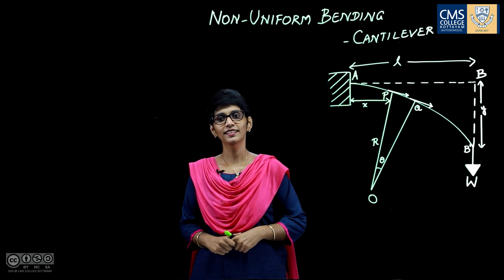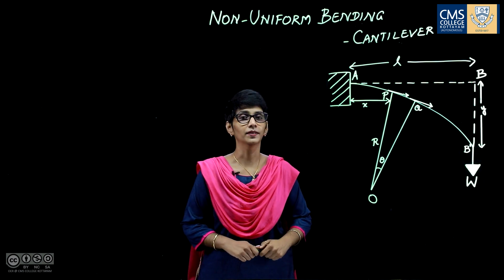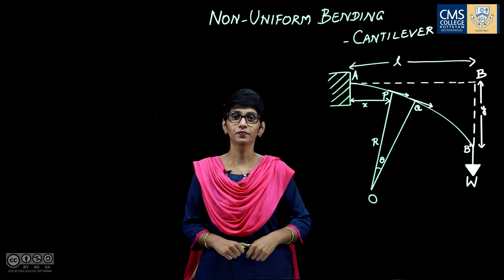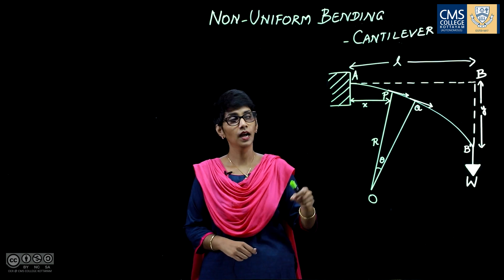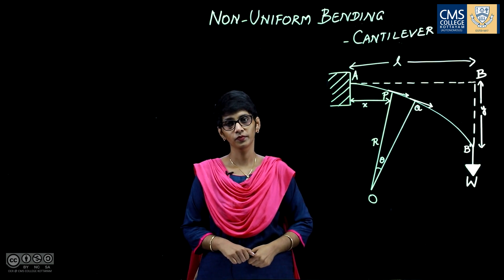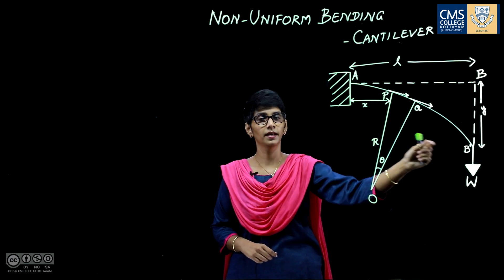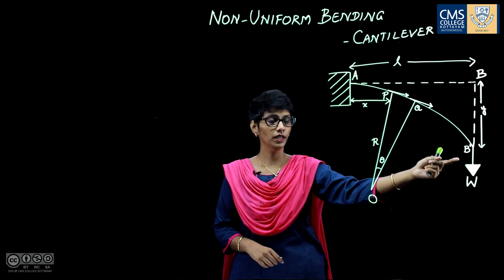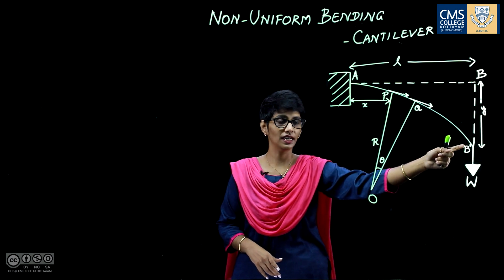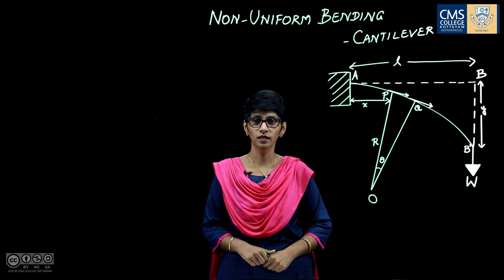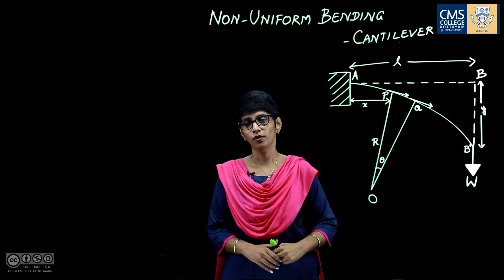Hello everyone. In this video we are going to see non-uniform bending in a cantilever. A cantilever is a beam which is held horizontally with one end fixed and the free end loaded. When the free end is loaded, the beam starts bending, and the bending is said to be non-uniform because at all points on the neutral axis the radius of curvature is not the same. That is why it is called non-uniform bending.